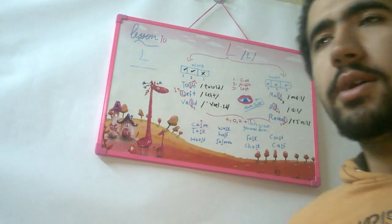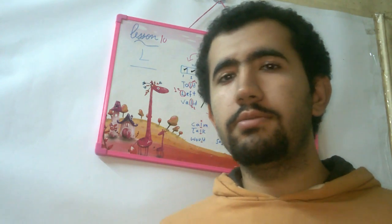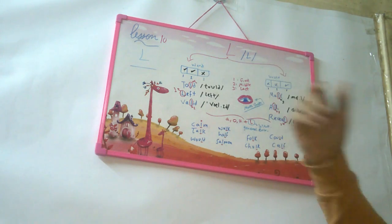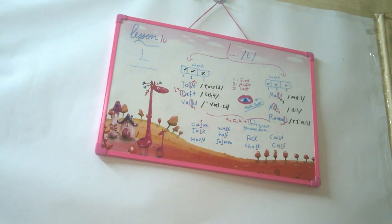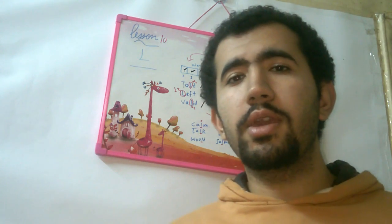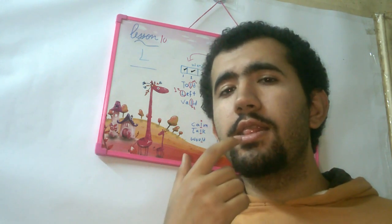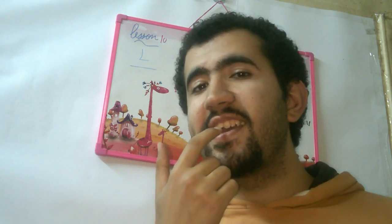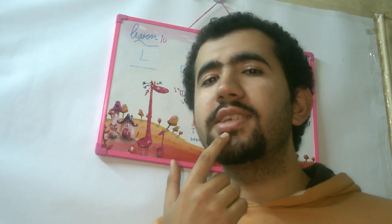And today we're going to talk about a very important lesson which confuses a lot of people. So today we're going to talk about the L sound. And to make the L sound, your tongue has to be behind your teeth. So this is your teeth and your tongue is behind your teeth.